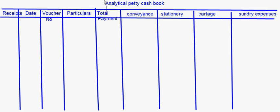The advantage of this format is that at the end of the period we can clearly see the amount spent on each item — how much has been spent on conveyance, how much on stationery, and so on. Whatever is the total of each particular column can be easily posted into the ledger, so it acts as a convenient way of posting into that particular ledger account.